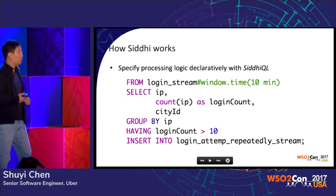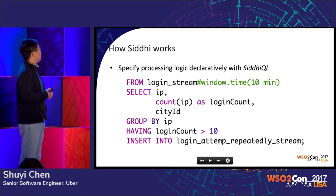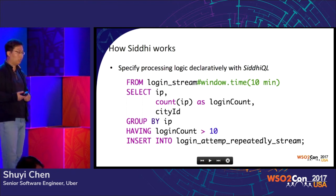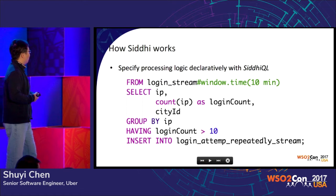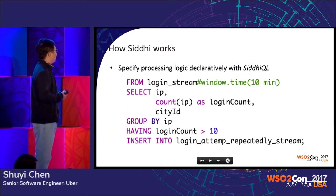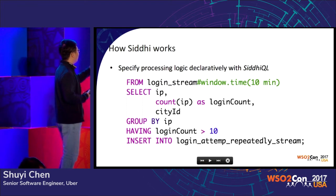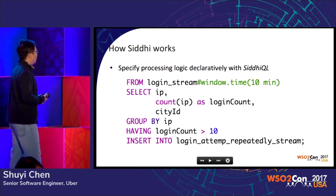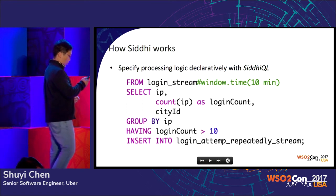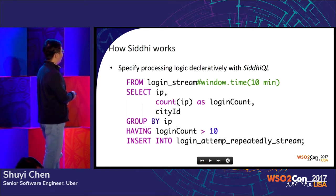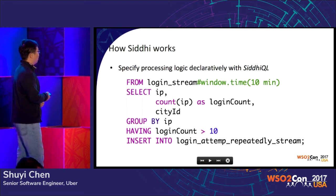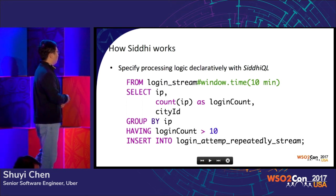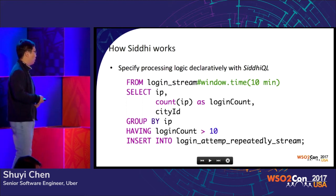From a user's perspective, you only need to specify the processing logic declaratively using the Siddhi query language. Here is the query for multiple logins from the same IP address. As you can see, it's very readable, similar to SQL. Basically, it reads from the login stream — the Kafka stream — over a sliding window of the last 10 minutes, does a group by IP, counts the number of logins, and if the login count is larger than 10, it inserts that into another stream called the login-attempt-repeated stream, which can then be used to take action in real time.